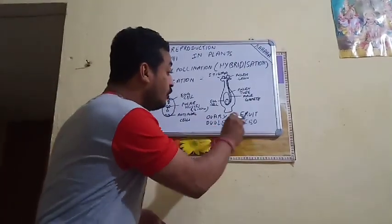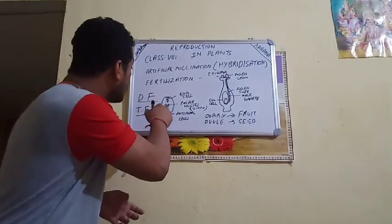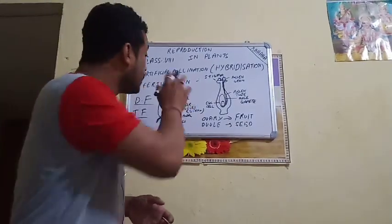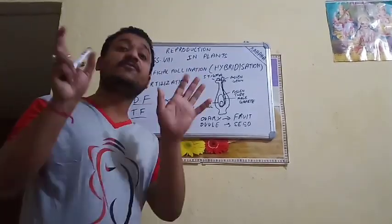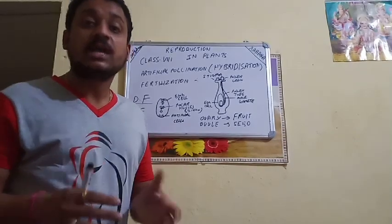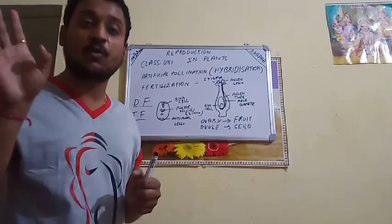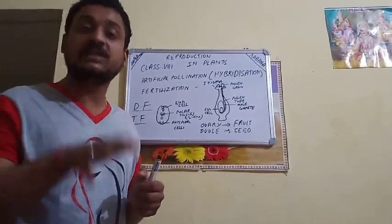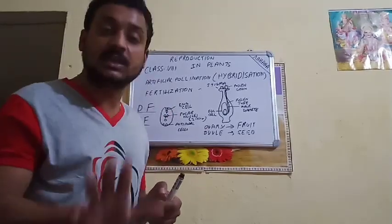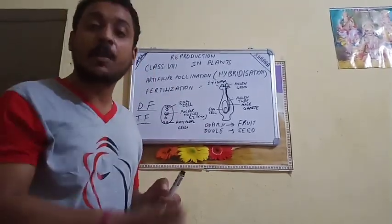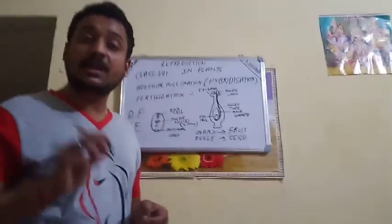If fertilization does not take place, then it will be considered a false fertilization. In that case, the flower will automatically shed off from the plant along with its calyx and corolla. If fertilization is missed, this process will happen automatically — the flower will shed off. I hope this video is clear to you. Please see the text and match it with my video.